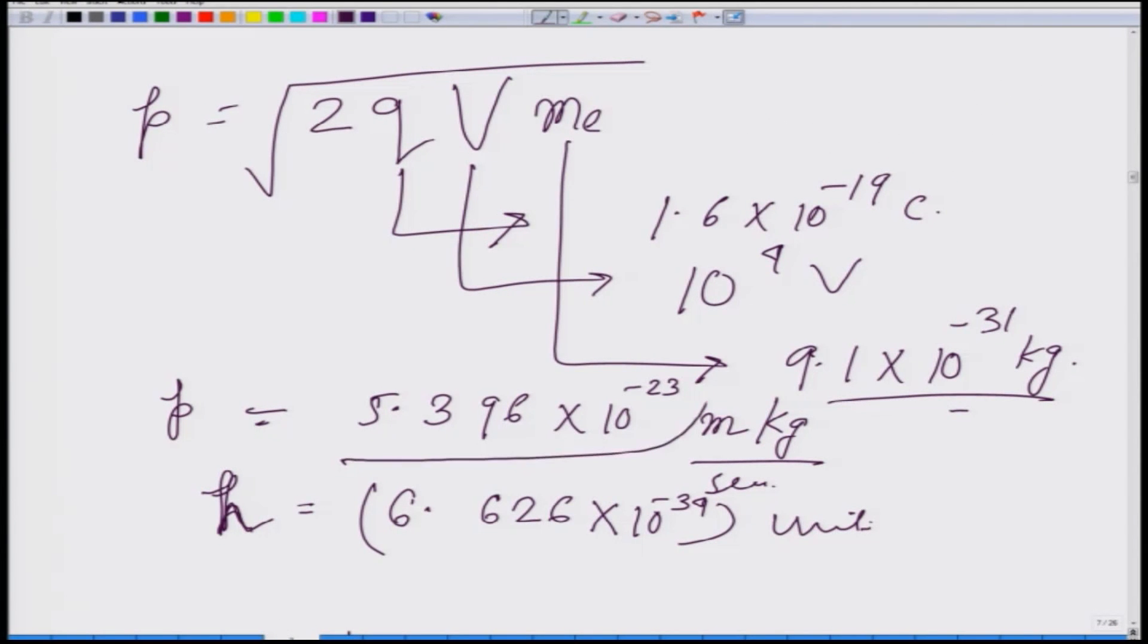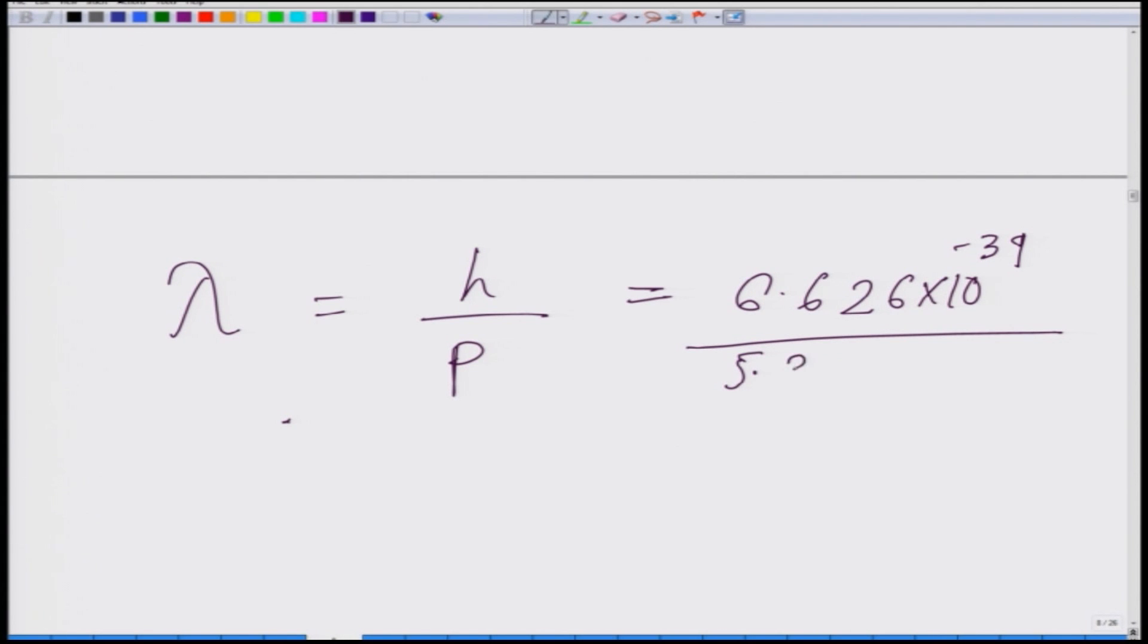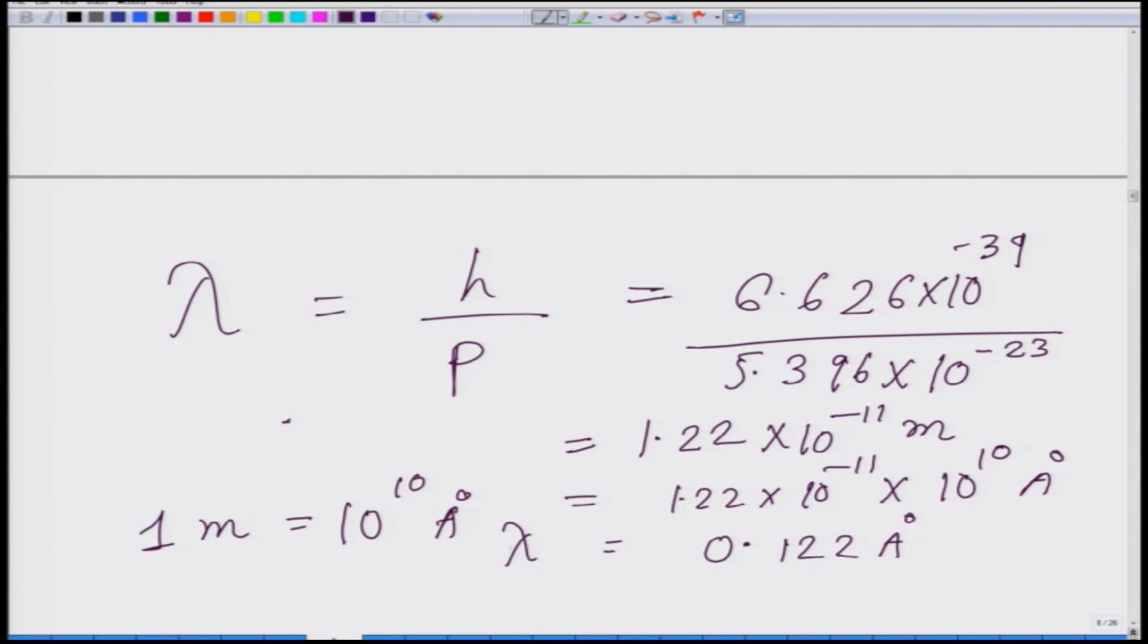When I want to find out the de Broglie wavelength that is h by p which is 6.626 times 10 to the power minus 34 divided by the value of p that we found out here which is 5.396 times 10 to the power minus 23 and we get 1.22 into 10 to the power minus 11 meter. We have already seen that we know that 1 meter is 10 to the power 10 Angstrom.